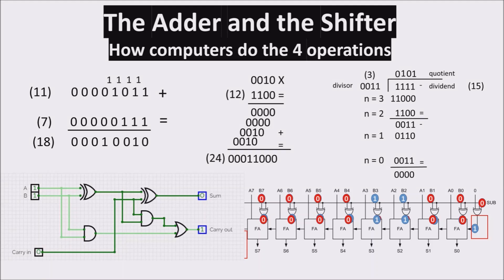In this video we'll see how computers do the four operations. In particular, we'll see how a small CPU faces this task. If you wonder to know how computers add and subtract, or how they multiply or divide, let's see together the adder and the shifter. If you are ready, let's get started!